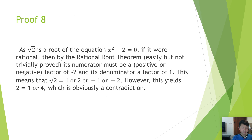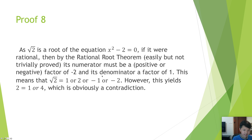Proof 8. As the square root of 2 is the root of the equation x squared minus 2 equals 0, if it were rational, then by the rational root theorem, its numerator must be a positive or negative factor of negative 2 and its denominator a factor of 1. This means that the square root of 2 equals 1, 2, negative 1, or negative 2. However, this yields 2 equals 1 or 4, which is obviously a contradiction.